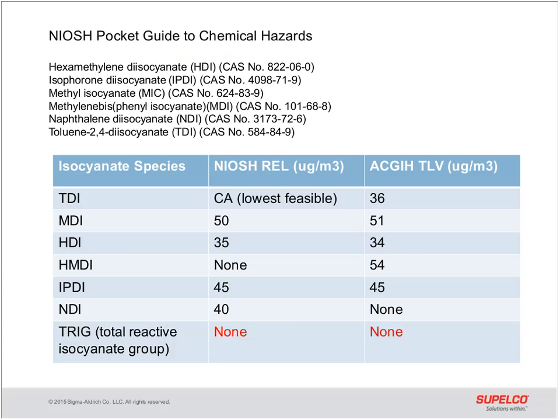Looking at what NIOSH has in their pocket guide, the information about isocyanates lists specific compounds — only monomeric forms. All other forms of isocyanates are not mentioned, except for the possibility of falling under the TRIG designation, or the Total Reactive Isocyanate Group, but there's still no information or guidance as far as exposures go. I bring up this point only to show you later on how important this could be.